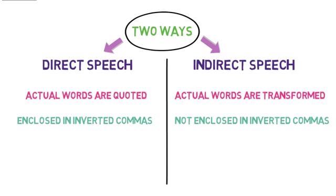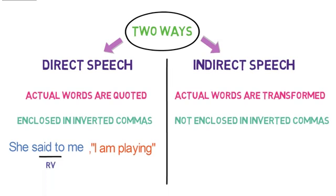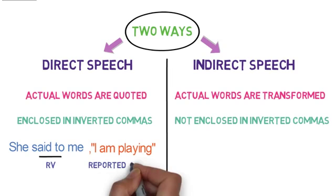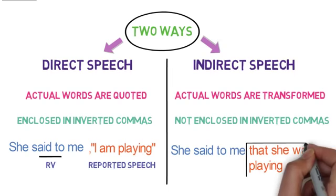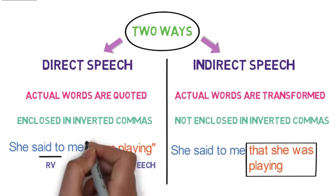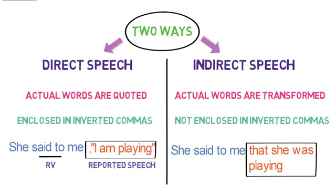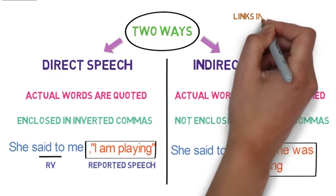Let's look at an example of direct speech: 'She said to me, I am playing.' Here, 'said to' is the reporting verb and 'I am playing' is the reported speech. In the indirect speech, the sentence will be written like this: 'She said to me that she was playing.' The second sentence is the transformed version of the first. Please check the previous video if you haven't already — links are provided in the description.